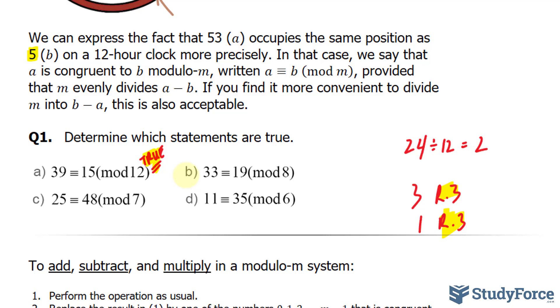For question B, 33 congruent with 19. Let's find out if that's true. Subtracting 19 from 33 gives us 14. 14 does not divide into 8, so this is false.